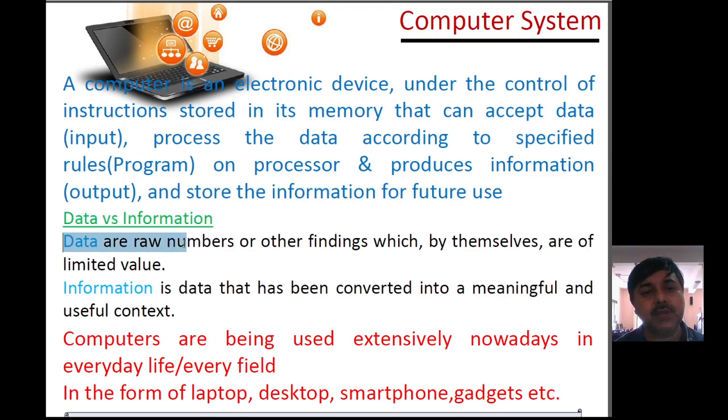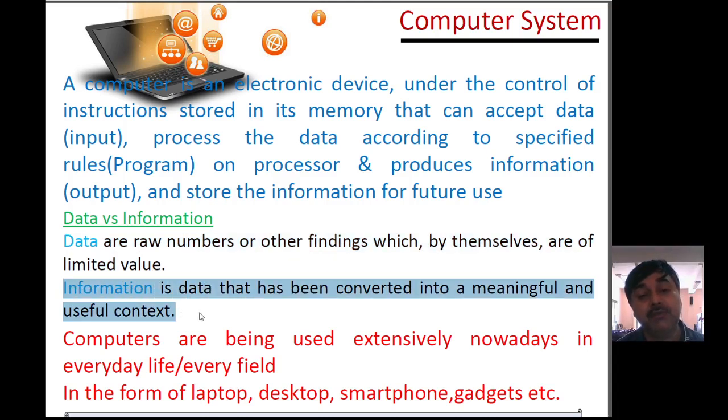What is data and what is information? Data means the raw fact. Suppose if I say 25, what do you understand by 25? It can be chocolates, a number, weather, atmosphere, water vapor, or humidity conditions. That means raw facts which by themselves have limited value. Information means I am saying you have scored 25 out of 30, which has meaningful data.